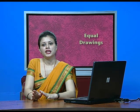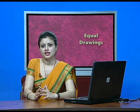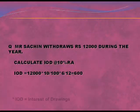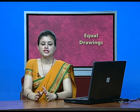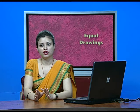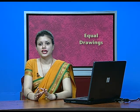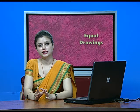Last question: Mr. Sachin withdraws 12,000 during the year; calculate interest on drawing at 10% per annum. Sometimes it is not mentioned whether it is beginning, middle, or end. In that case, we always assume the middle of the month and use the average period of 6/12. This concludes the cases of equal drawings.